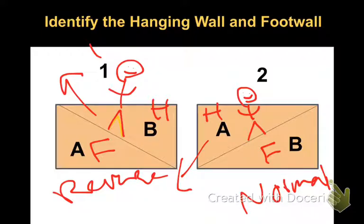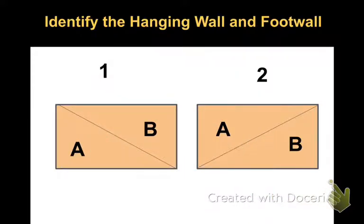That's the type of question they would ask you — identify the hanging wall and foot wall, and then if something moved one way or the other, determine what type of fault it is. Please ask people in the room or send an email if you need help. You can also look up videos on identifying hanging wall and foot wall. But study your boundaries more — that's more important than this section.